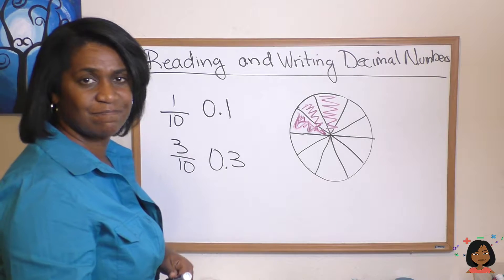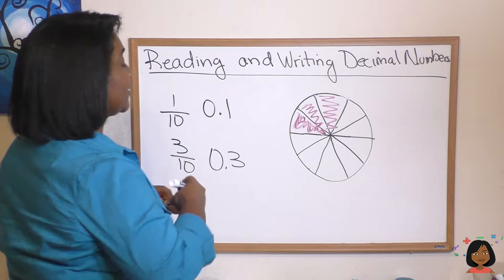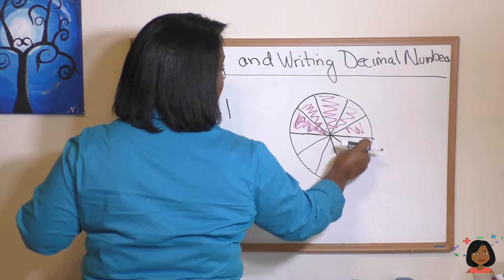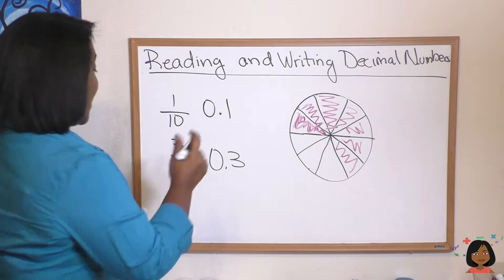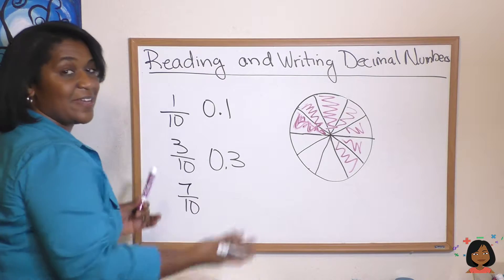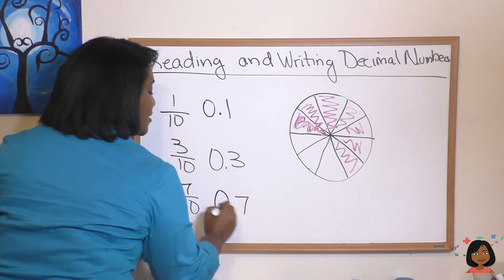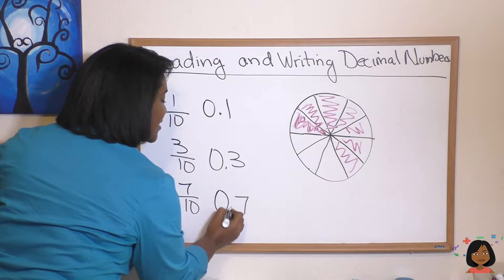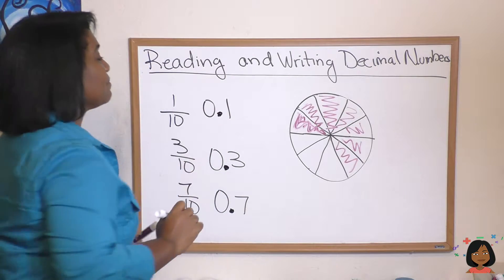Let's say I just went for it and decided to have a full seven pieces of pie. Now we're down to seven tenths — we're still over ten because ten is our total — and our decimal is 0.7. Let's make those decimal spots nice and big so you can see them.